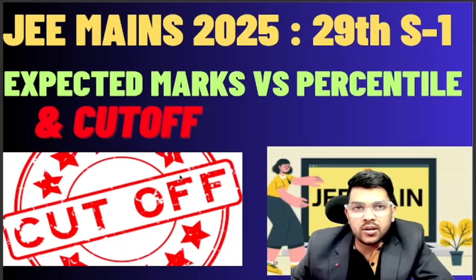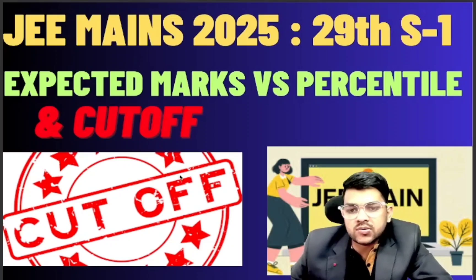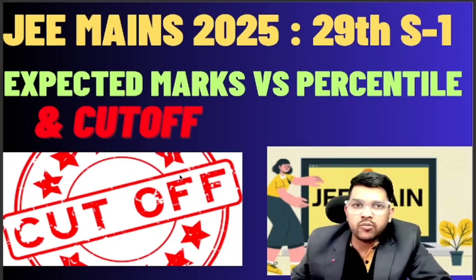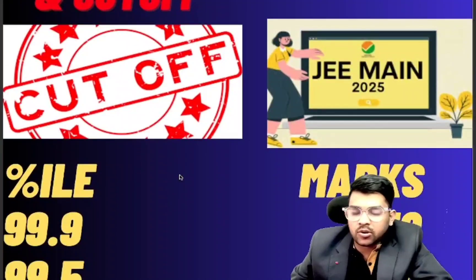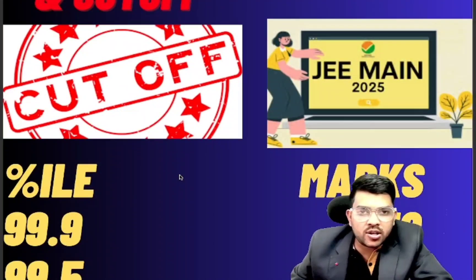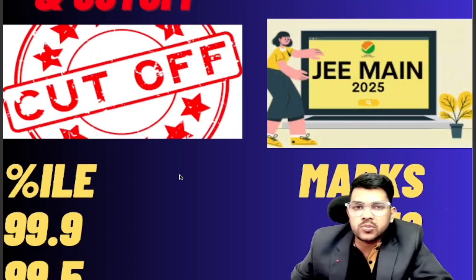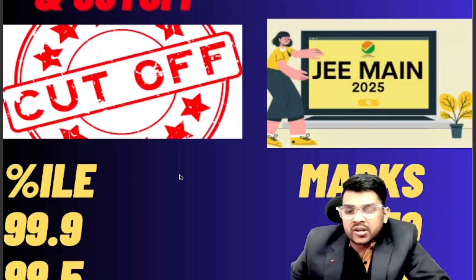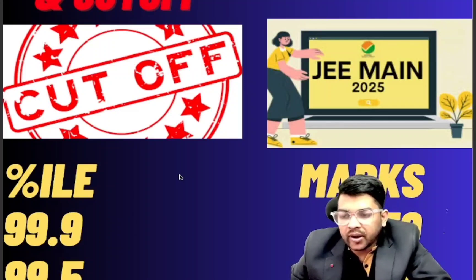Hi friends, this is Amit here. As you all know, 29 Shift 1 is done now, so I am sharing the expected marks versus percentile and cutoff. As usual, for the previous shifts I have already informed the information. Here, the paper was a little bit easy as compared to yesterday's paper, because yesterday's paper was very difficult — particularly the first shift of 28. Here the paper was easy to moderate, you can say, so that will have an effect on the marks versus percentile.